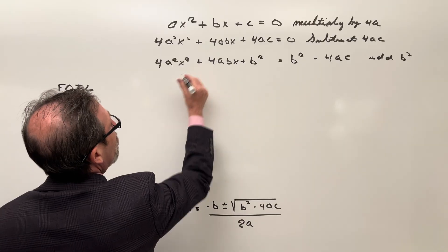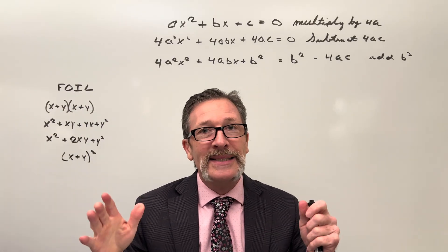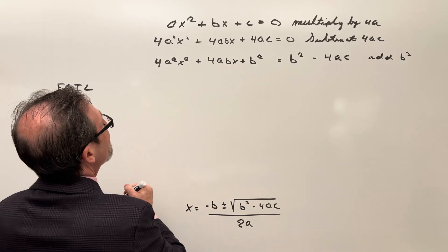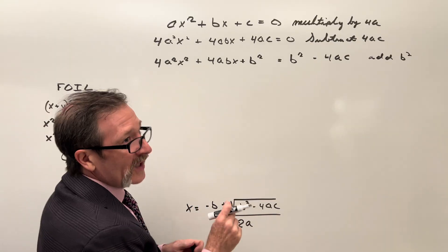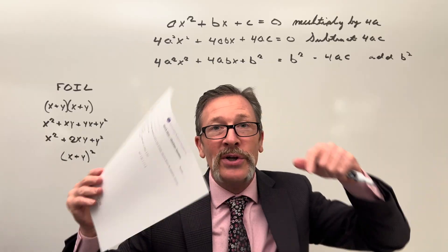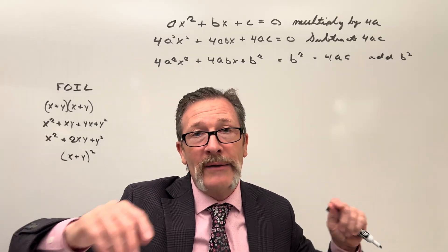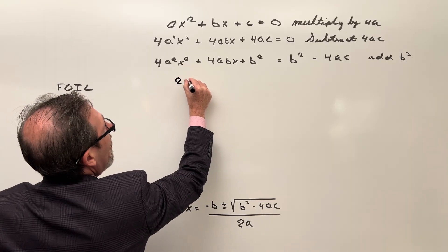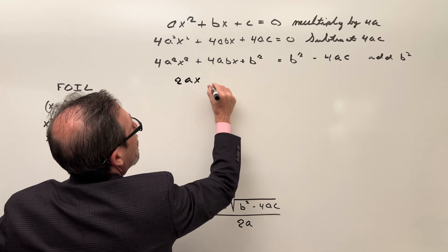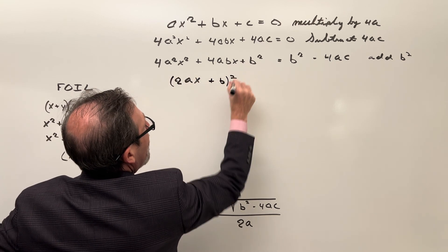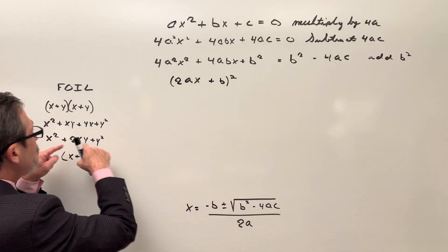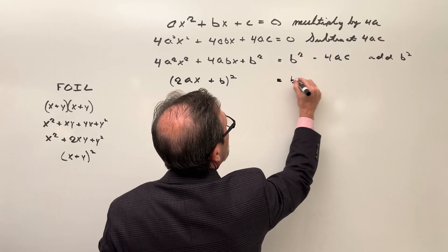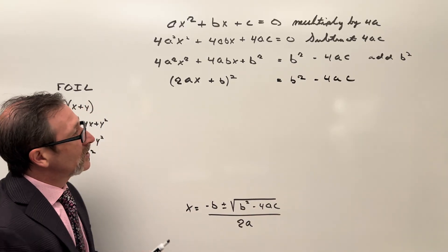Give the students a chance to do it, because if they can get this next step they'll likely get the rest. Students can probably complete the square — they'll ask: what could I square to give me this expression? Most of them will see it's (2ax + b)². They can work backwards and foil to verify. That leaves b² minus 4ac on the right side, and now they need to figure out how to isolate x using a square root.